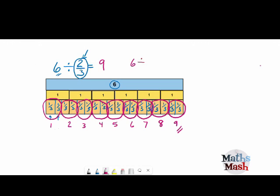So another way of doing that is 6 divided by 2 thirds is 6 times 3, divided by 2. Going to give us 6 times 3 is 18, divided by 2 is going to give us 9.